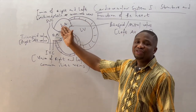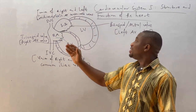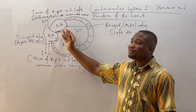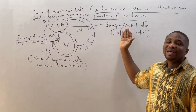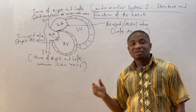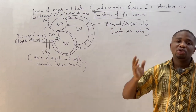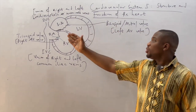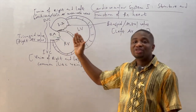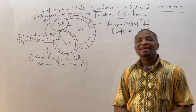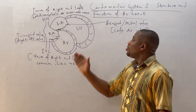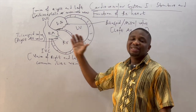On the left side of the heart, where we have the left atrium and the left ventricle, blood drains from the left atrium into the left ventricle through the mitral valve, also called the bicuspid valve. It is called the bicuspid valve because it has two cusps or two leaflets. Based on its location between the left atrium and the left ventricle, it is also known as the left atrioventricular valve.